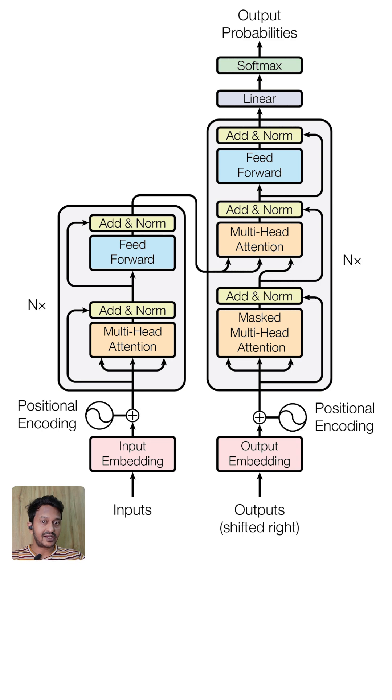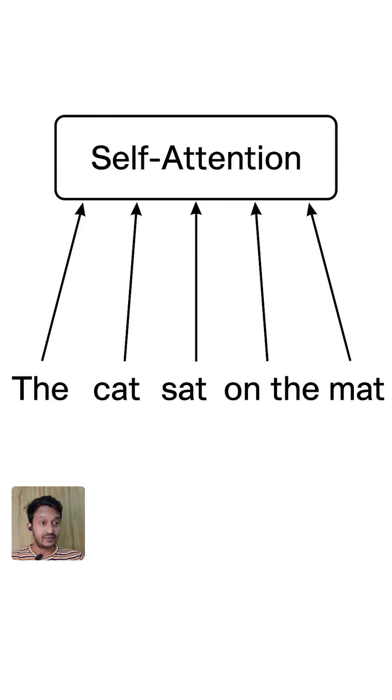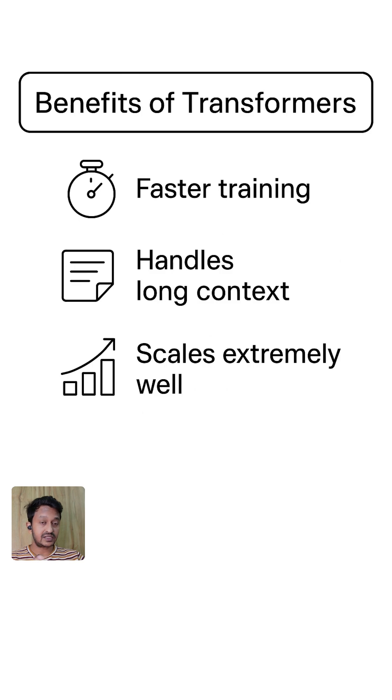Transformers are models that rely entirely on attention and they don't process sentences one word at a time. They look at the whole sentence at once in parallel. What are the benefits of transformers? You get faster training, handles long context, and scales extremely well.